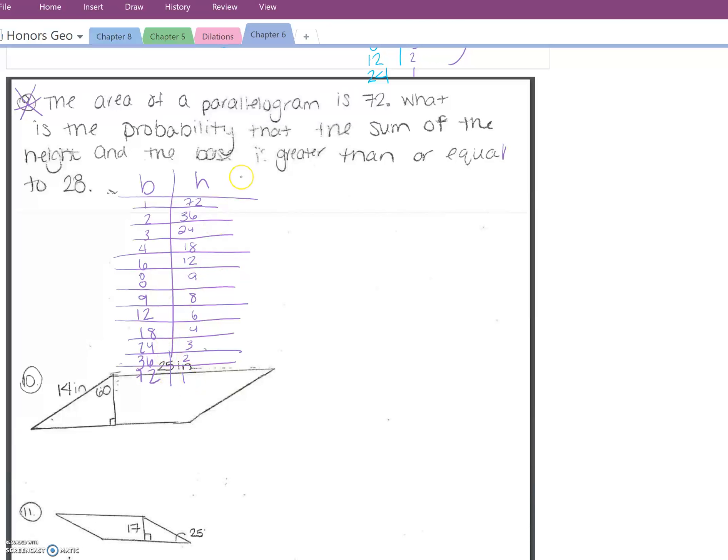Okay, so now what is the probability that the sum is greater than or equal to 28? So I need all the numbers that are greater than or equal to 28. Let's make a separate column for the sum. The mathematical symbol for sum is this little sigma, just a little fun fact. You have 73, 38, 27.